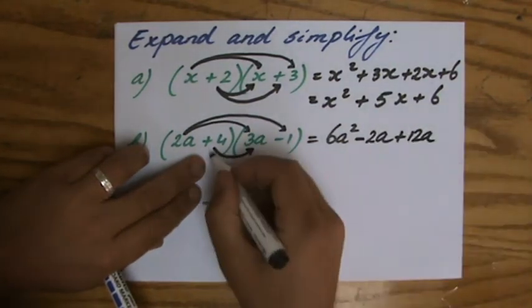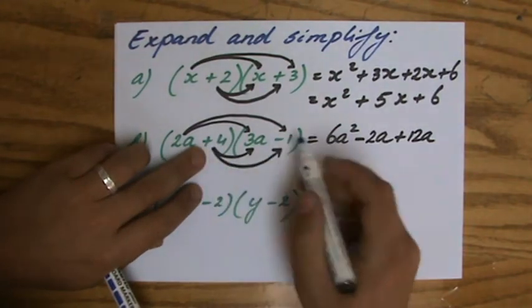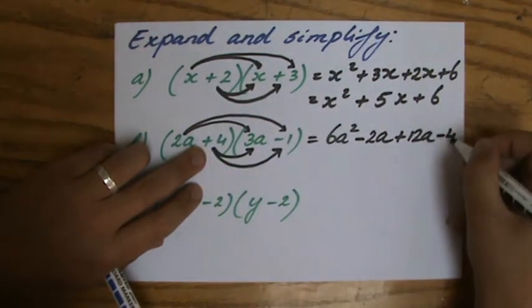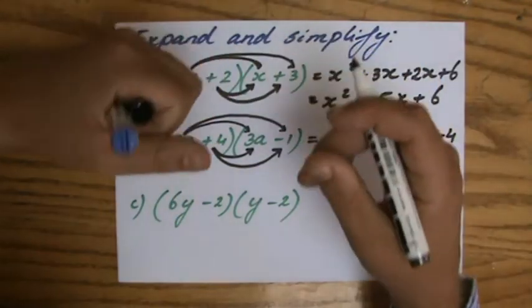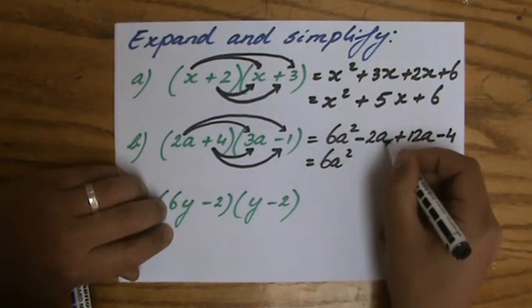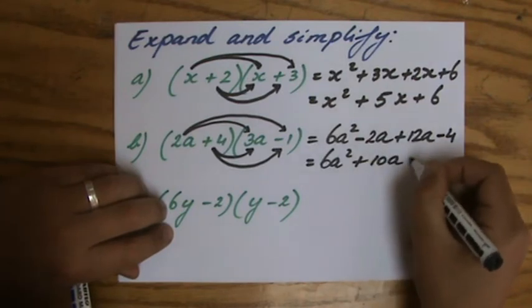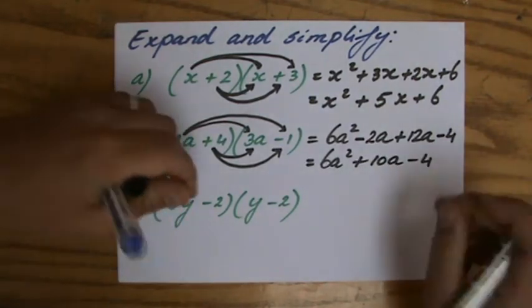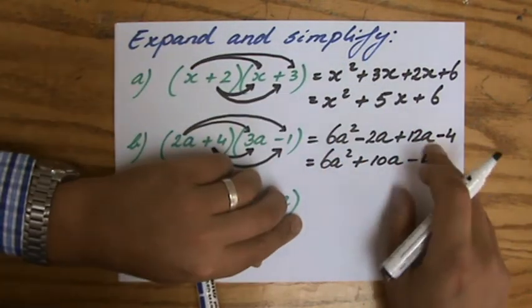And 4 times minus 1, so a positive 4 times minus 1, so minus 4. Expand, take away the brackets and simplify - combine the like terms. Minus 2a plus 12a, that is a positive 10a minus 4. Or if it's easier for you, 12a minus 2a is 10a.